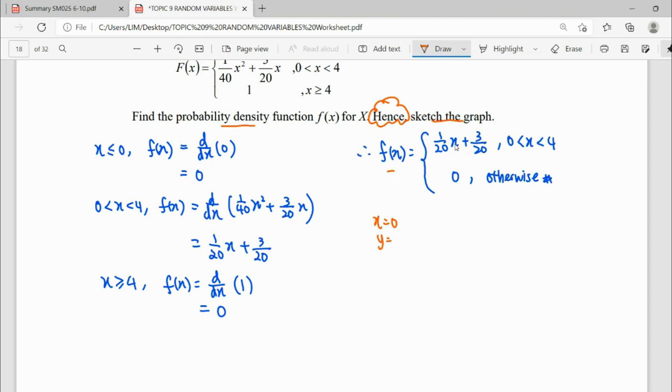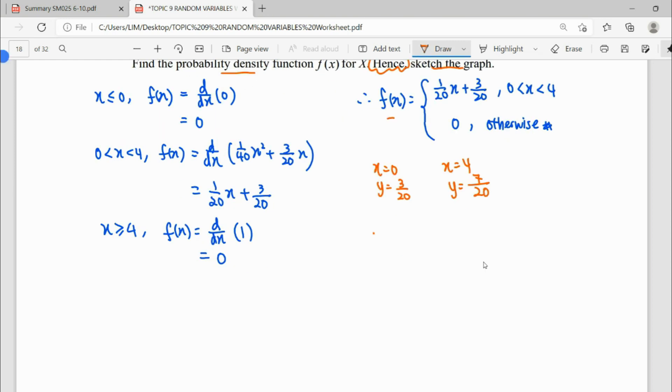When f(0), we can see here this is 3 over 20. Ending interval when x is equal to 4, the y coordinate will be 7 over 20. Then you can start drawing. So this is our f(x) which has 7 over 20.